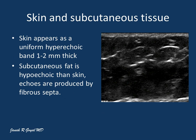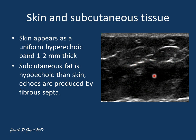Let's look at the echogenic characters of some of the common tissues. The skin appears as a uniform hyperechoic band, one to two millimeters thick. The subcutaneous fat is hypoechoic compared to skin, and the echoes are produced by the fibrous septa. The echogenicity of the subcutaneous tissue will vary depending upon the amount of fat and the fibrous tissue content.